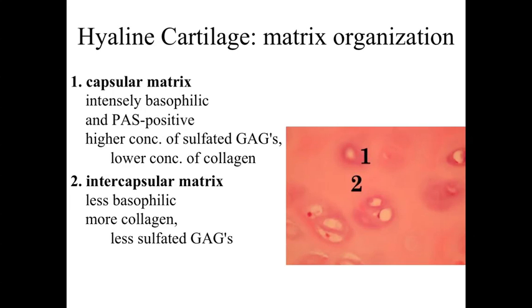Looking at the organization within hyaline cartilage, the cells are the chondrocytes. These cells sit within a structure called a lacuna — essentially a cavity or space within the cartilage — and they fill up that space and are responsible for producing the cartilage matrix around them. Immediately outside the lacunae, closest to the cartilage cell, we have a region referred to as the capsular matrix — the extracellular matrix in the immediate region surrounding the lacunae.